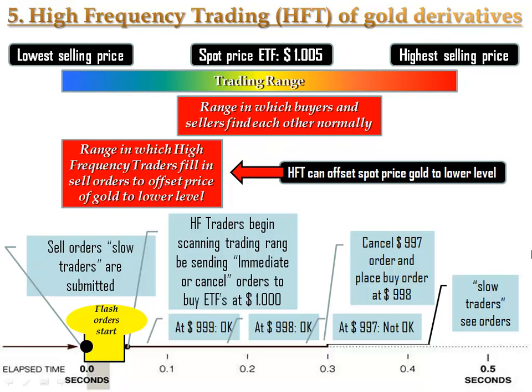Let's say at that time the total range of sell offers varies from $998 an ETF to $1,012 an ETF. Under normal circumstances, chances are sell and buy orders cancel out each other in between the range of $1,001 and $1,009 an ETF.